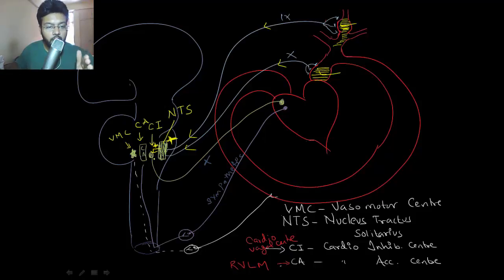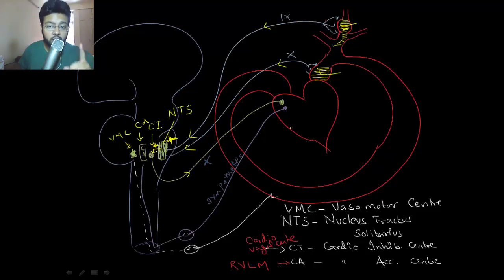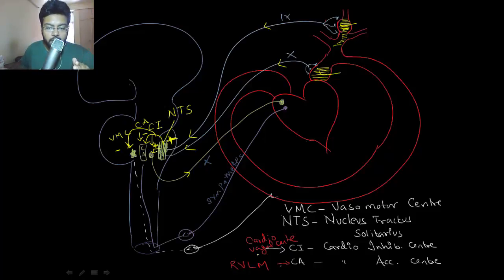This cardio inhibitory center is also called the cardio vagal center because it sends the vagus to slow the heart. You don't want the cardio accelerator system to stimulate your heart, because your goal is to decrease heart rate and cause vasodilation to decrease blood pressure. That's why the nucleus tractus solitarius also inhibits the cardio-acceleratory center and the vasomotor center, so there is no vasoconstriction. The cardio-acceleratory center is also called the rostral ventrolateral medulla.